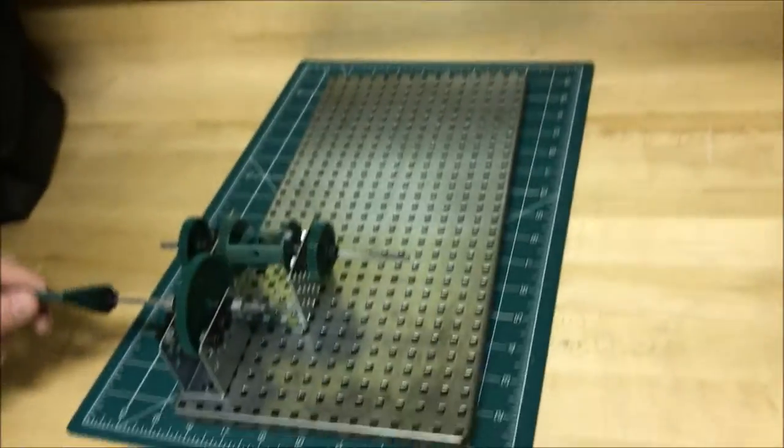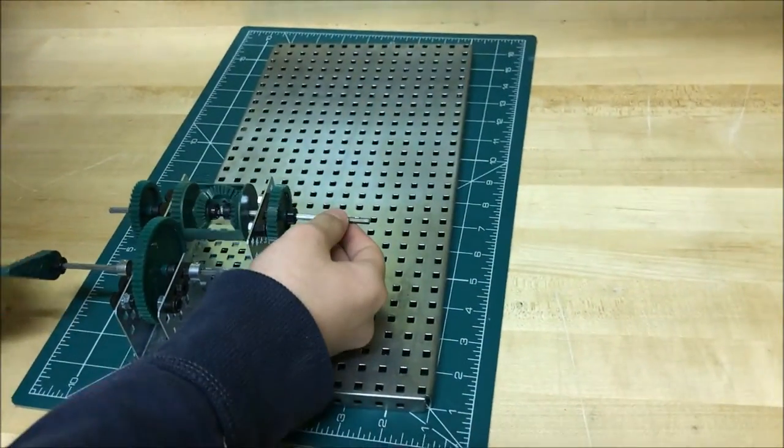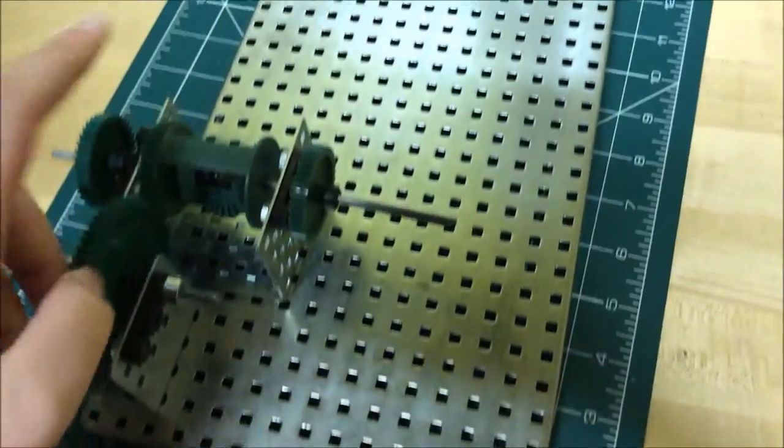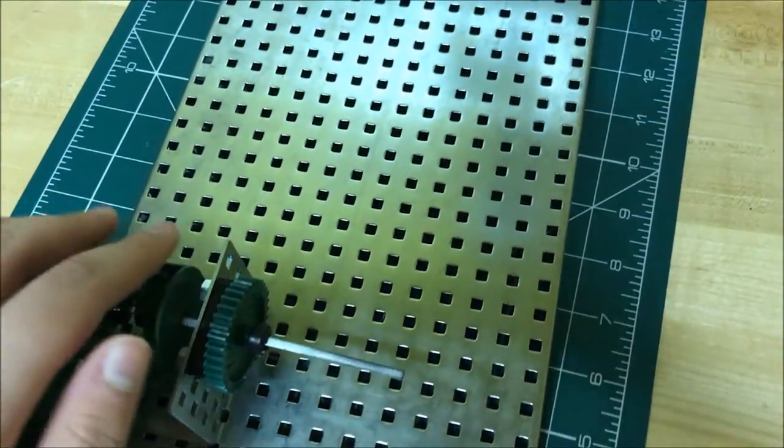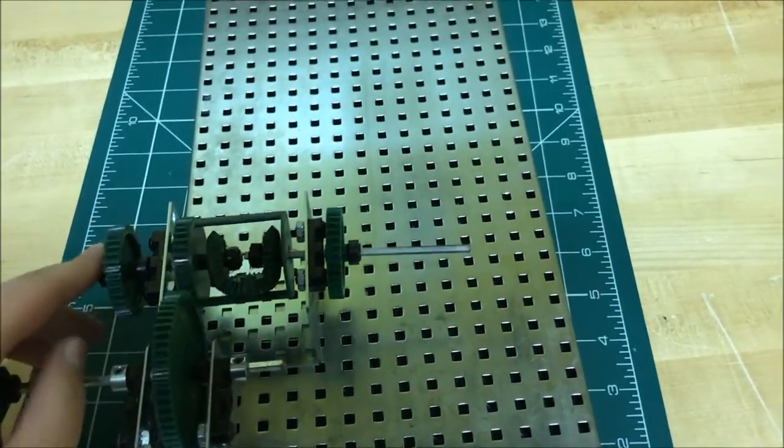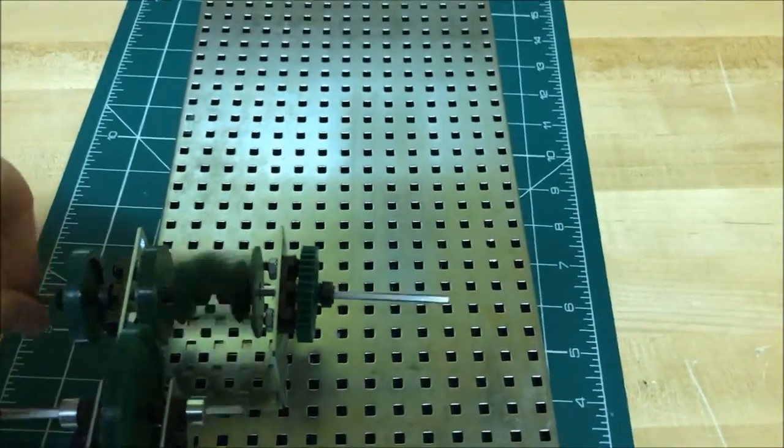The point of this mechanism is to have one side be able to stop or just slow down. It works by having this input gear spin this plastic thing, which causes this gear to go around these two. So both of them spin. Both sides spin.